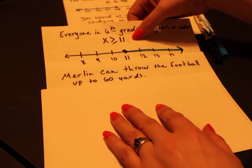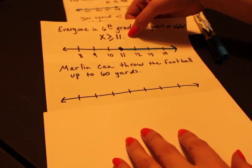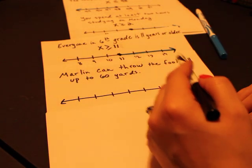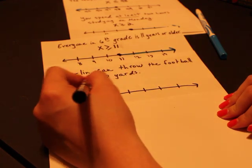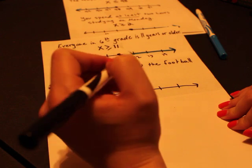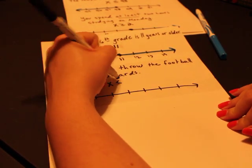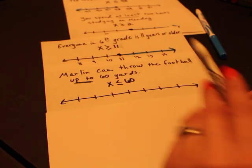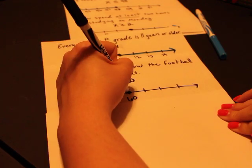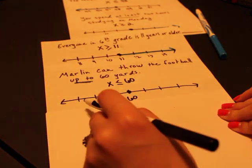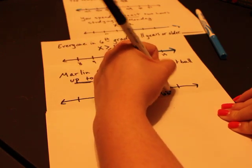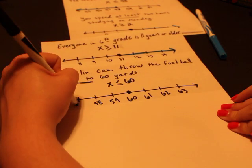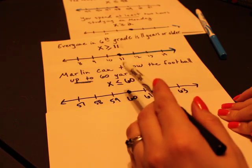And then our last example I'm going to do with you. Marlon can throw the football up to 60 yards. So that means the highest amount of yards he can throw is 60. So remember, up to—that means it's going to be less than or equal to that number. So you've got x is less than or equal to 60. And now we'll look here. Less than or equal to, we've got 60 right there. It's going to be a closed circle. And we're going to fill in all of our numbers here. So 61, 62, 63 this way, got 59, 58, 57.